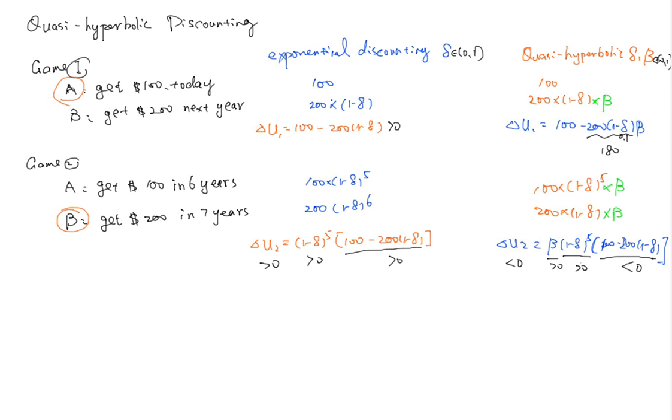So now this part is now 180. So if the beta is small enough, let's say beta is 0.5, so now this is 90 and you will get U1 that is larger than zero. So now you can successfully explain why you choose A in game one.